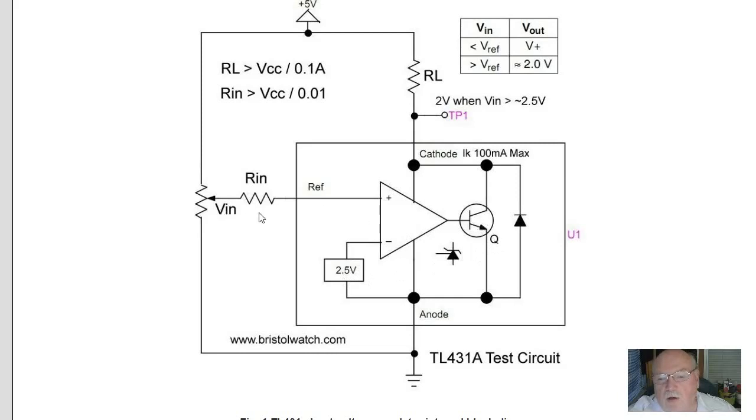When VIN equals or exceeds 2.5 volts, the output at TP1 here drops from VCC, V+, to 2 volts.